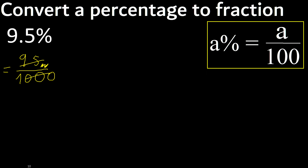This can be simplified because it can be divided by the same number — divided by 5. 95 divided by 5 is 19; 1,000 divided by 5 is 200. Finish.